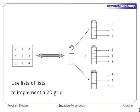As you recall, we're implementing a 2D grid using a list of lists. A single list serves as the spine of the structure, and then each of the sublists stores the actual values.